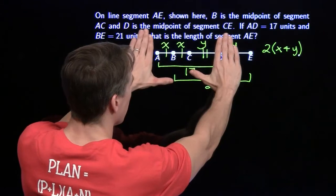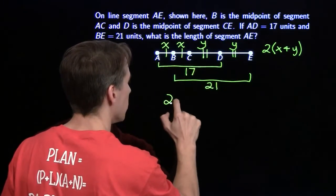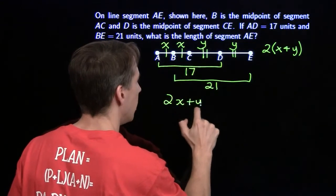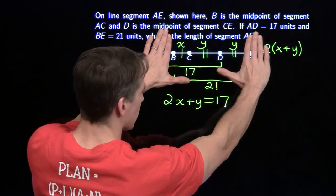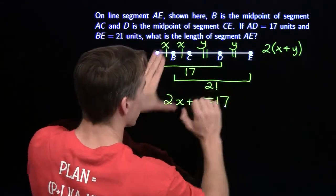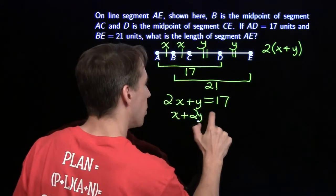I'm going to look right here. I've got an equation staring me right in the face. 2x plus a y gives us 17, so there's one equation. Then over here, I have another equation: x plus 2y is 21.